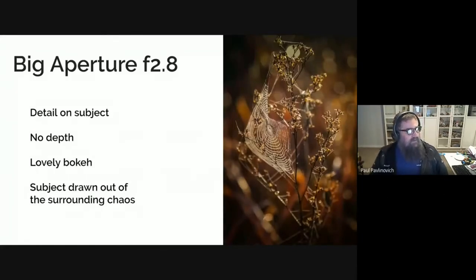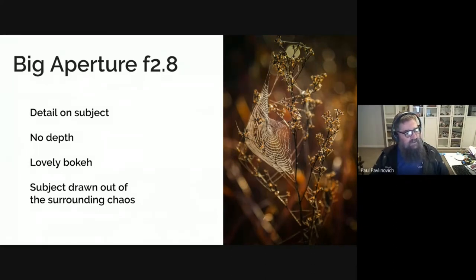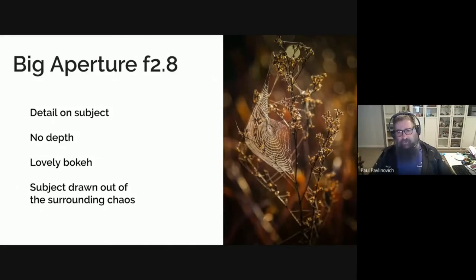With a big aperture at f2.8, you can see there's great detail in the subject. The subject in this image is the spiderweb — I like the really rich warm light and I wanted to isolate that spiderweb from its surroundings, so there's almost no depth in the image. You can see in the grass or bush that the spiderweb's on that it blends out of focus in both directions — towards me and away from me — really close to the web.